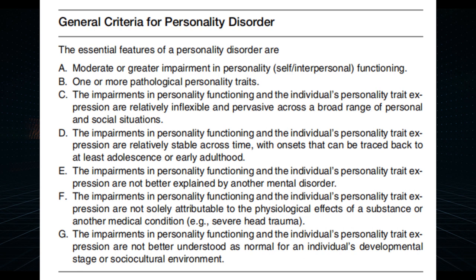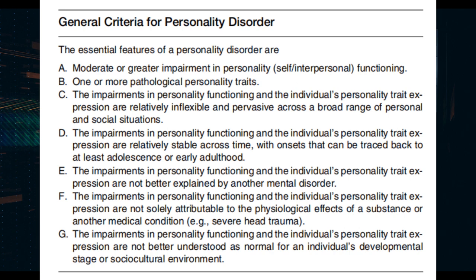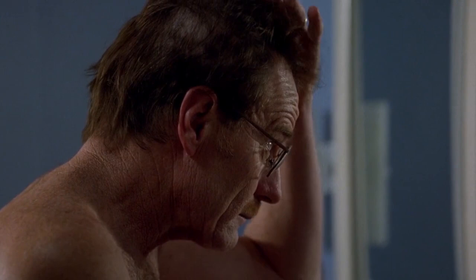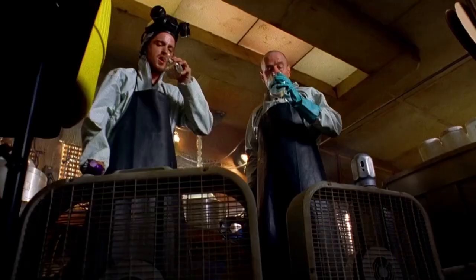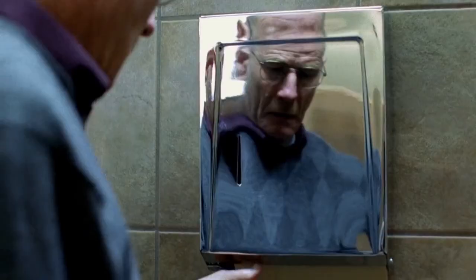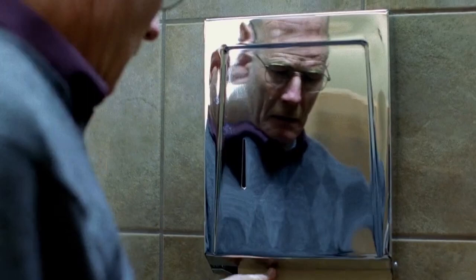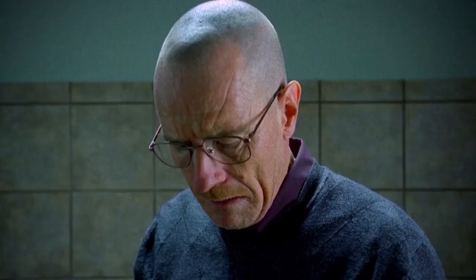Under the General Criteria for a Personality Disorder (GCPD), Criterion A focuses on moderate or greater impairment in personality self/interpersonal functioning. The first area we must concentrate on is the level of impairment of Walter's identity and self-direction. An identity is who you are as a person, and the basis of that identity is built upon your memories, personality traits, beliefs, and attitudes. Your identity is formed from the significant people around you, reference groups, and the role you choose to play in society. Doubts about your identity could lead to the development of a personality disorder.